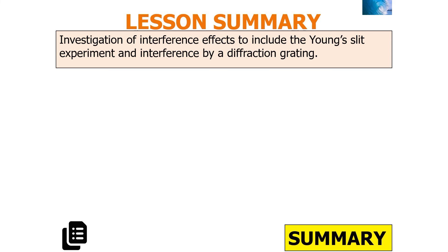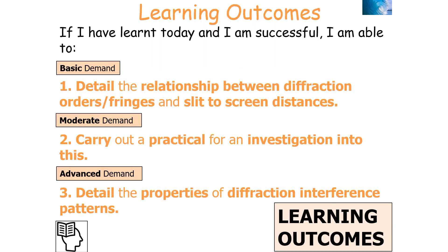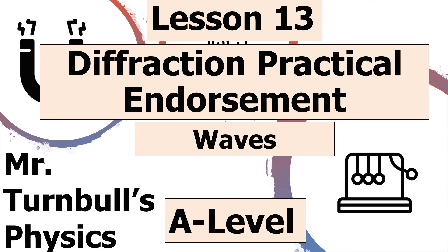In summary, this investigation covers interference effects using both the Young's slit experiment and the diffraction grating. We can now detail the relationship between diffraction orders, fringes, and slit-to-screen distances; carry out the practical investigation; and describe the properties of diffraction interference patterns. Thank you very much for watching this lesson on the diffraction practical endorsement, part of the Waves topic for AQA A-level physics. Have a lovely day.